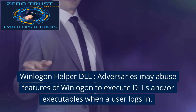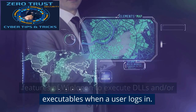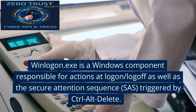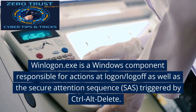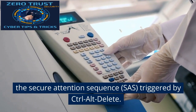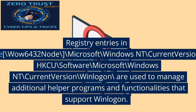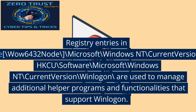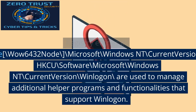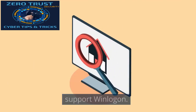WinLogin Helper DLL: Adversaries may abuse features of WinLogin to execute DLLs and/or executables when a user logs in. Winlogon.exe is a Windows component responsible for actions at logon, logoff, as well as the secure attention sequence (SAS), triggered by Control-Alt-Delete. Registry entries in HKLM\Software\WOW6432Node\Microsoft\Windows NT\CurrentVersion\Winlogon and HKCU\Software\Microsoft\Windows NT\CurrentVersion\Winlogon are used to manage additional helper programs and functionalities that support WinLogin.